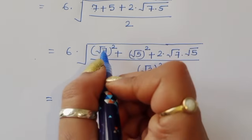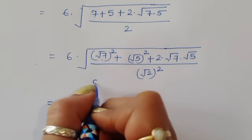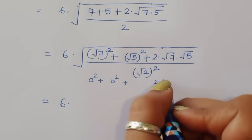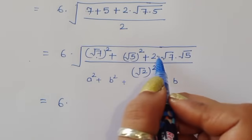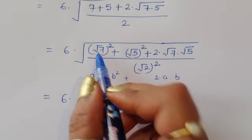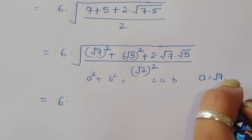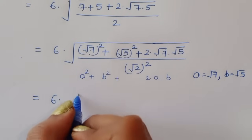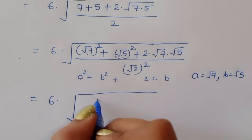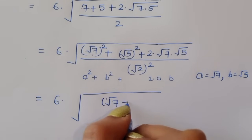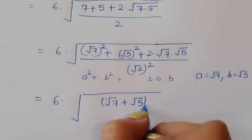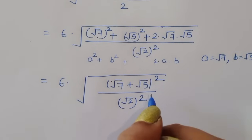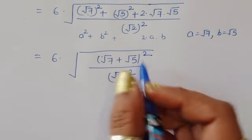We recognize this as the pattern a squared plus b squared plus 2ab, which equals (a plus b) squared, where a is square root of 7 and b is square root of 5. So the numerator becomes (square root of 7 plus square root of 5) whole square, divided by square root of 2 whole square.